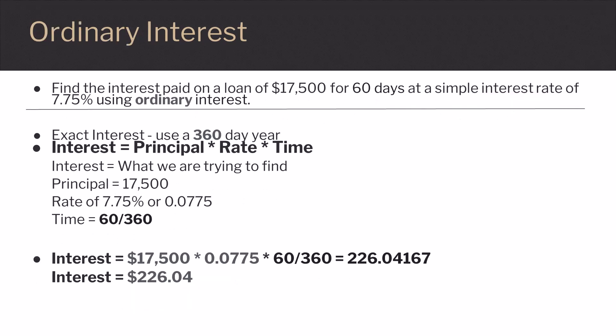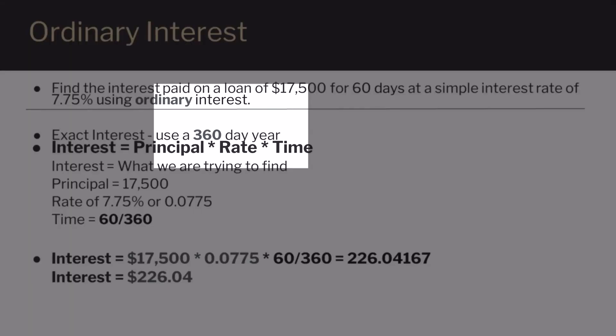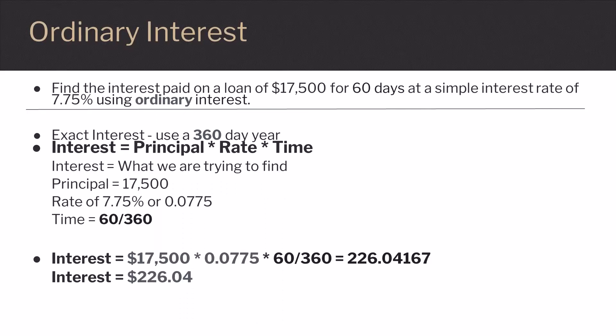The other type of simple interest we can calculate is known as ordinary interest. With ordinary interest, you use a 360-day year. This is used to make calculations easier, as each ordinary month has a nice round 30 days. This is the only difference between ordinary and exact interest.